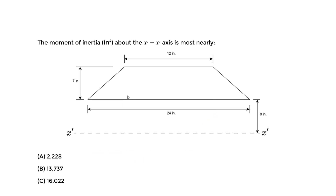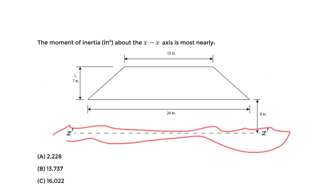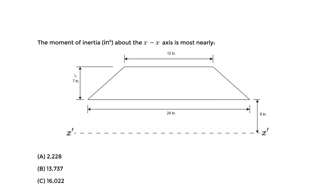Let's do an example to find the moment of inertia about the x prime x prime axis. We're looking at a cross section in the context of civil engineering, specifically structural analysis with beams. The moment of inertia for beam cross sections is a measure of the beam's ability to resist bending — the larger the moment of inertia, the less the beam will bend.